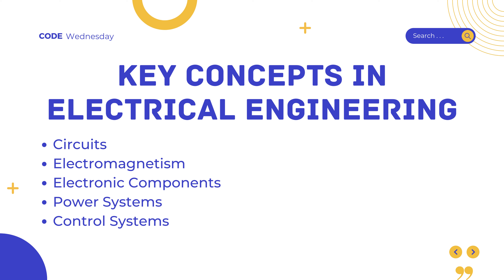Electromagnetism — electromagnetic theory is the wizardry behind it all. It unveils the secrets of magnetism, the ethereal realm of electromagnetic waves, and the enchanting dance of electromagnetic fields. Electronic components — think of these as the building blocks of magic. From resistors to capacitors, diodes, transistors, and the miniature marvels of integrated circuits, they're the tools of the electrical engineer's craft.